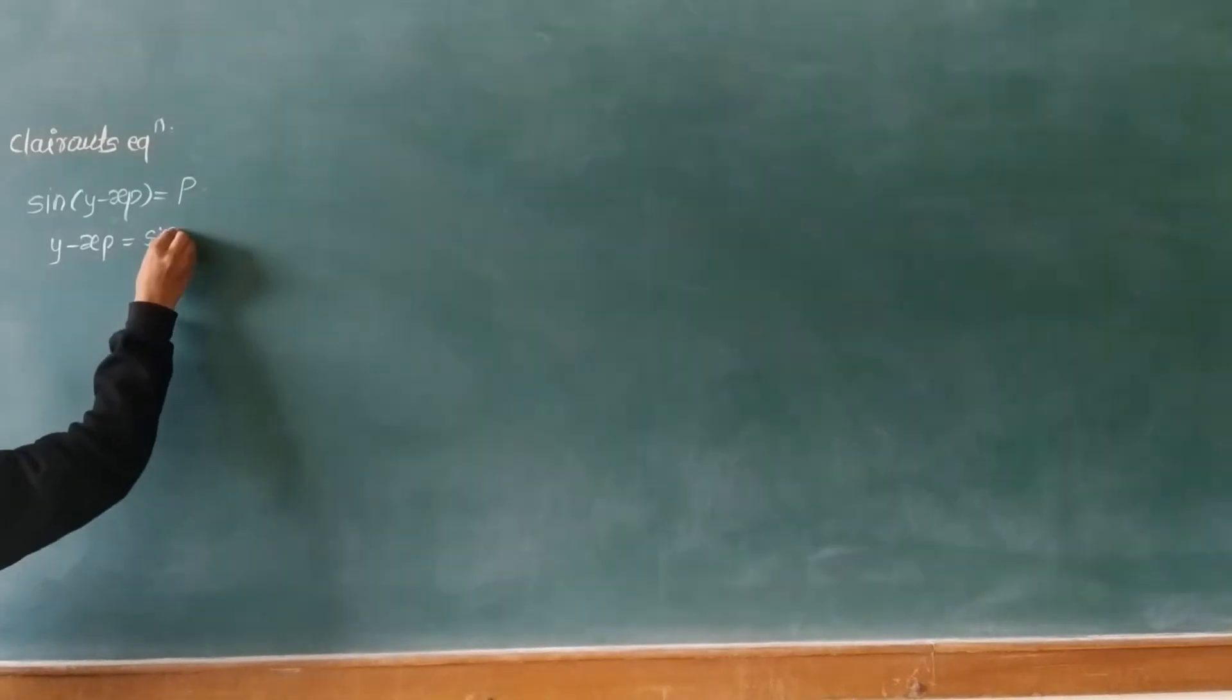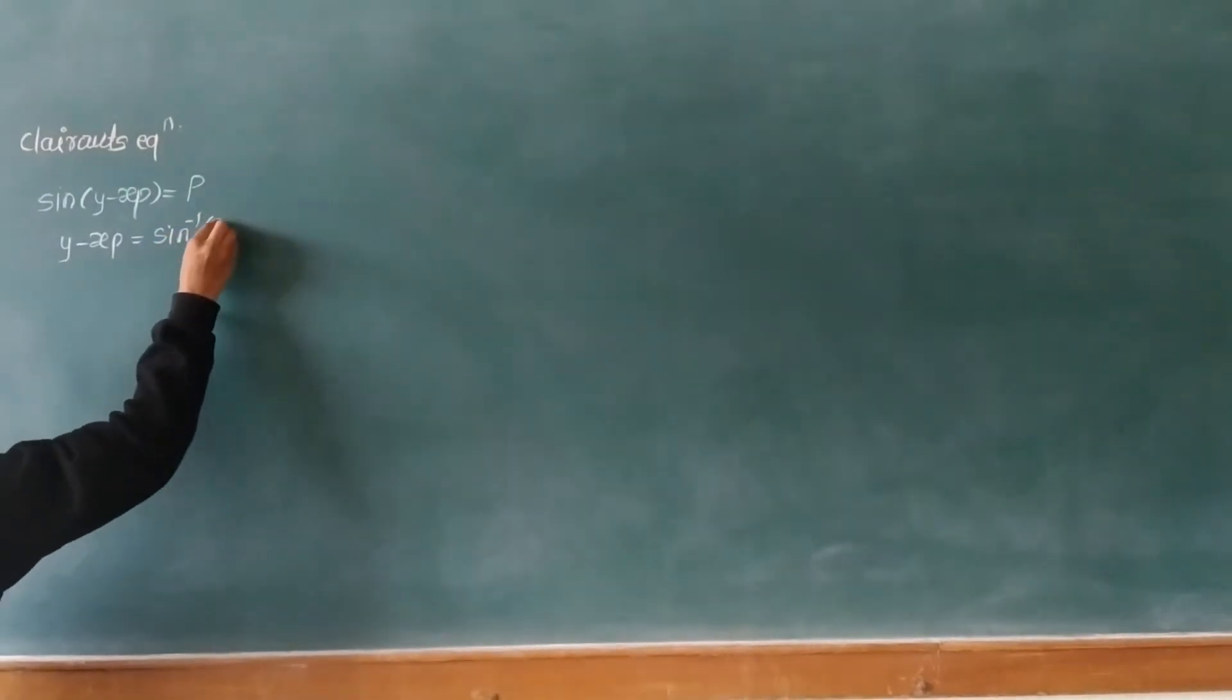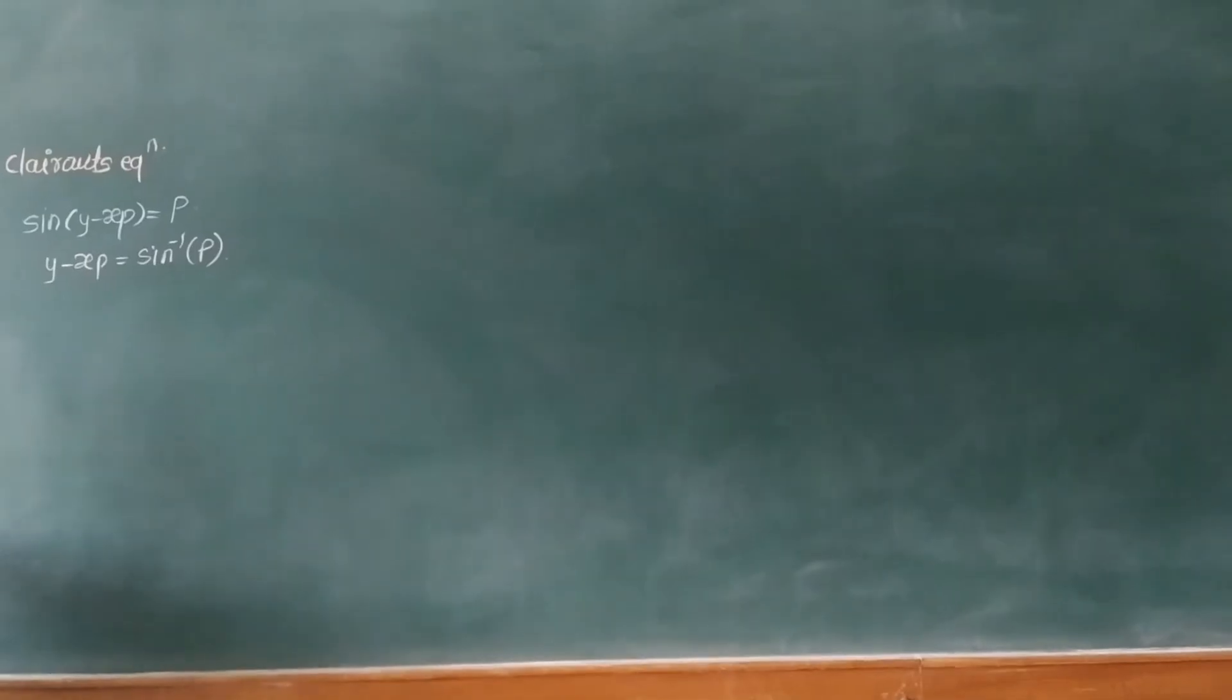Clairaut's equation is given by y equals px plus f of p, and p equals dy by dx.